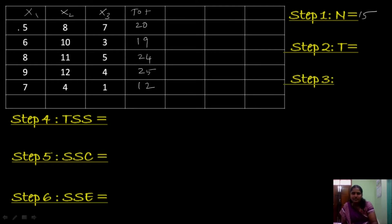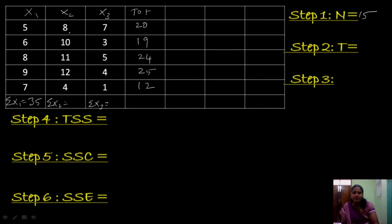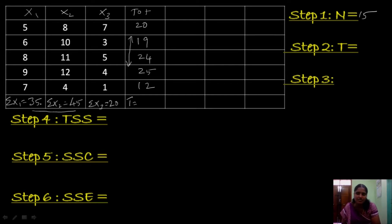And I have to calculate the column totals — sigma x1, sigma x2 and sigma x3. For x1: 6 plus 5 is 11, plus 8 is 19, plus 9 is 28, plus 7 is 35. For x2: 8 plus 10 is 18, plus 11 is 29, plus 12 is 41, plus 4 is 45. For x3: 7 plus 3 is 10, plus 5 is 15, plus 4 is 19, plus 1 is 20. So our T value is 35 plus 45 plus 20 equals 100.